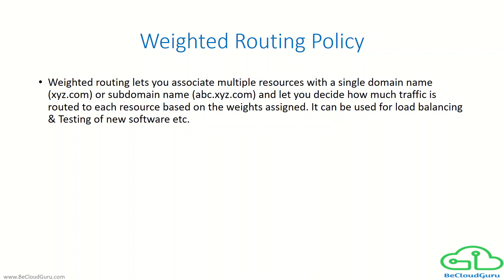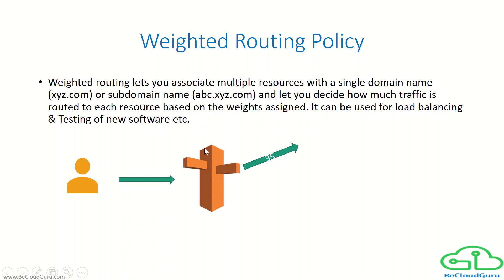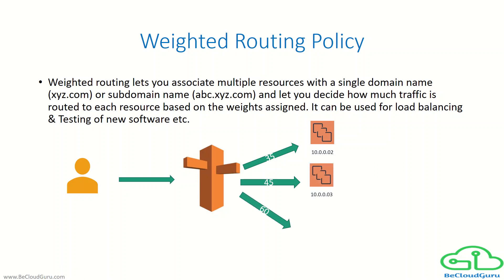So what is a weighted routing policy? To configure weighted routing, you create resource records that have the same name and type for each of your resources. You assign each record a relative weight that corresponds with how much traffic you want to send to each resource — for example, the number 35 as the weight assigned to a particular server. Amazon Route 53 sends traffic to a resource based on the weight as a proportion of the total weight for all records in the group.